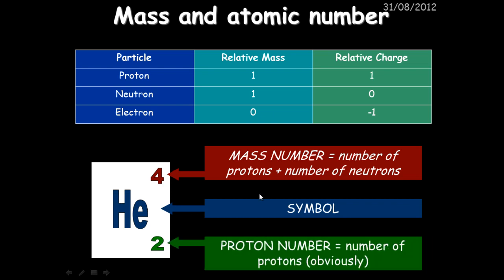The bottom number, which is the proton number, tells us the number of protons and it also tells us the number of electrons. In this case, helium, we know, has two protons. It also has two electrons because remember, the proton number is usually the same as the electron number. This mass number tells us the number of protons plus the number of neutrons and therefore, that must be two. The number of neutrons must be two because two plus two gives us the four here.